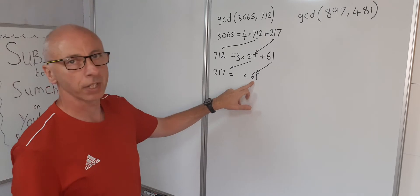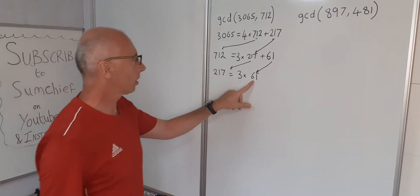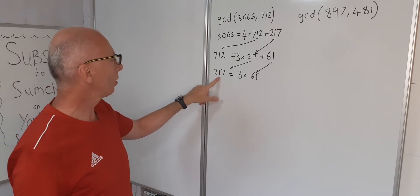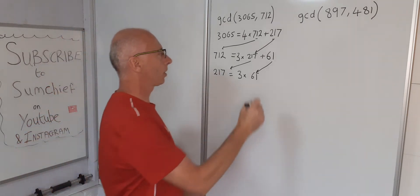Well that's going to be 3. So 3 times 61 is 183. 183 off 217 is going to give us 34.